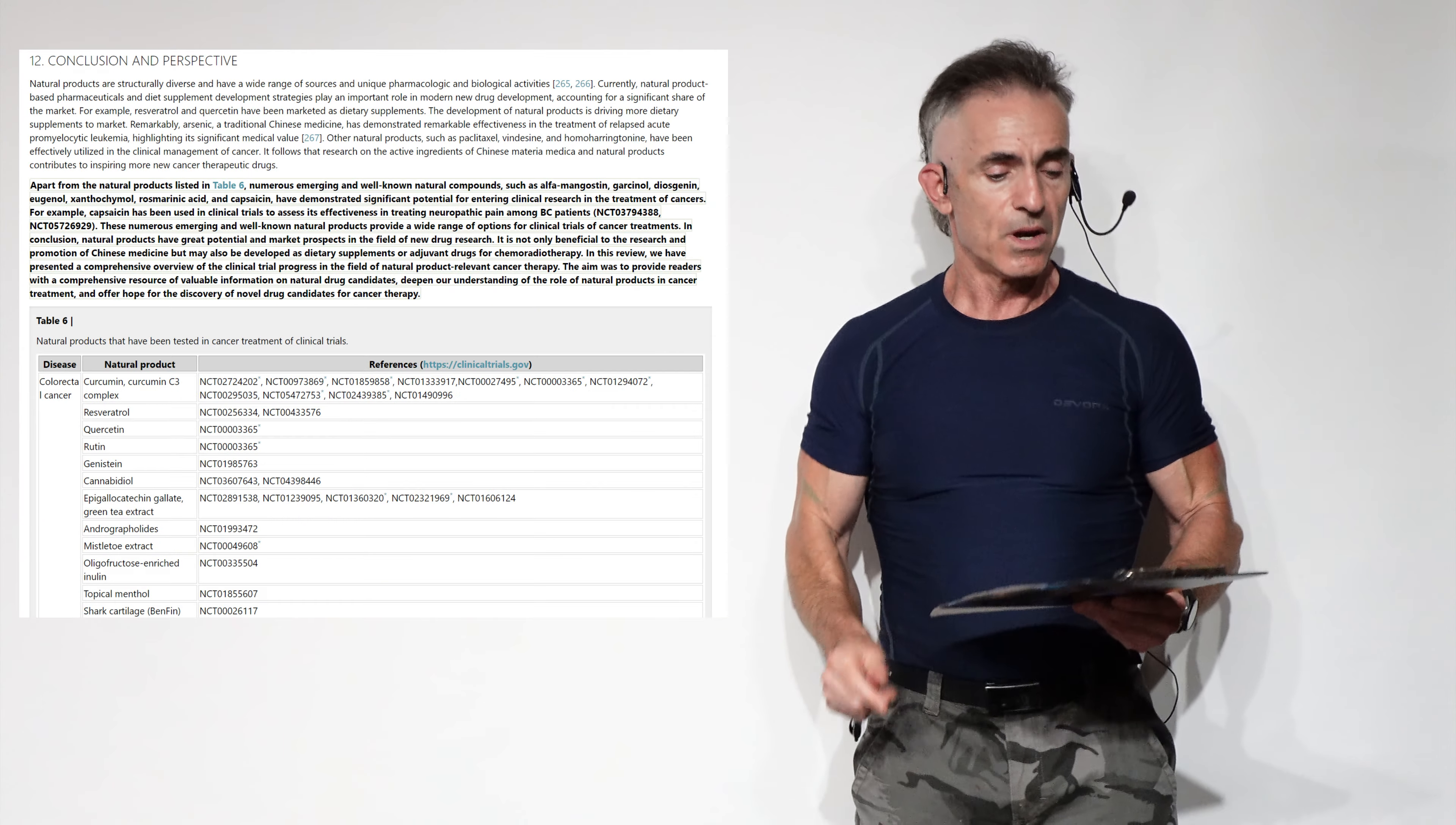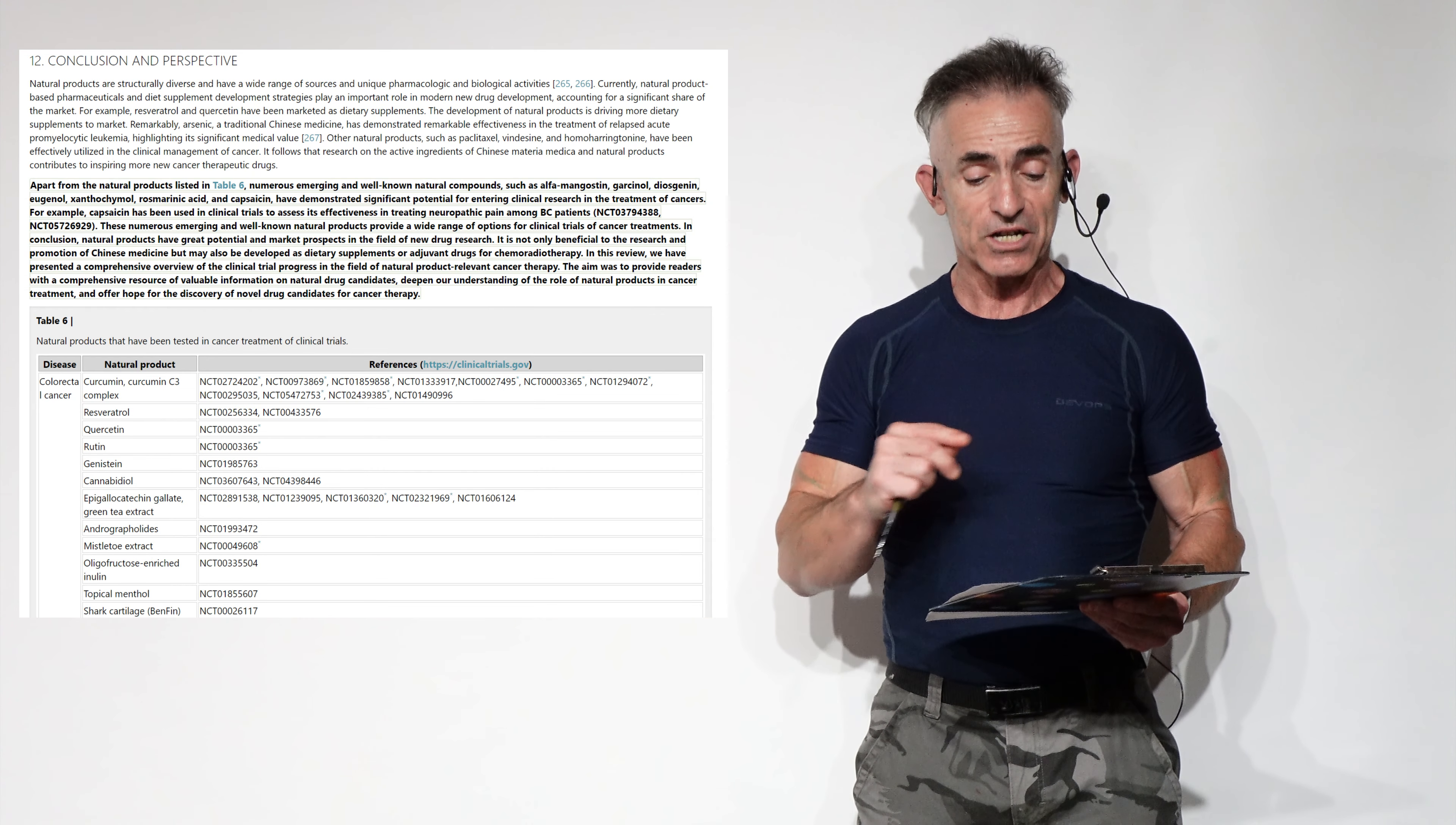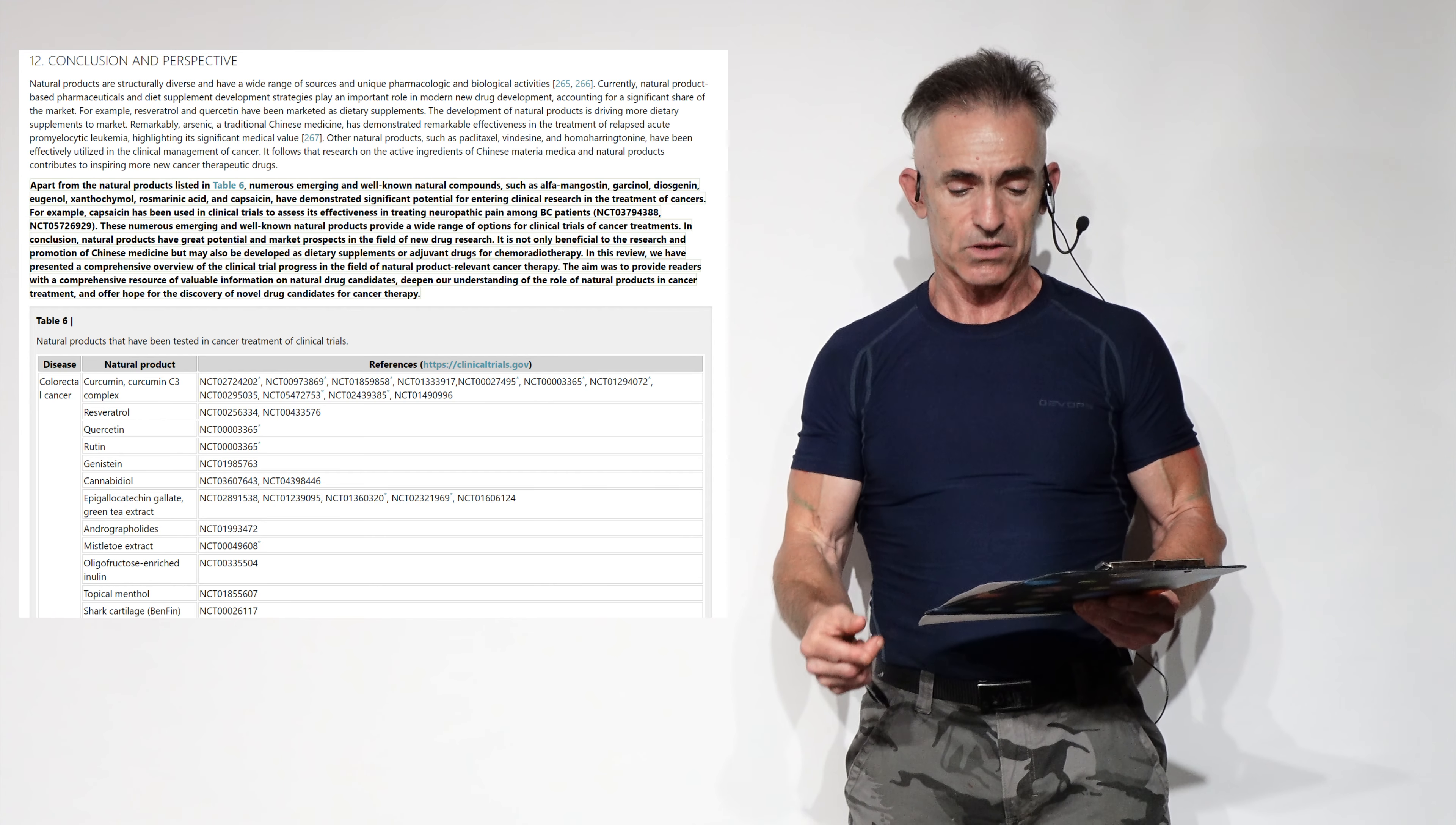To start to conclude, apart from natural products listed in Table 6 and its huge list, numerous emerging and well-known natural compounds such as albaconol, carnosol, thiosidogenin, eugenol, xanthohumol, rosmarinic acid, and capsaicin have demonstrated significant potential for entering clinical research in the treatment of cancers.